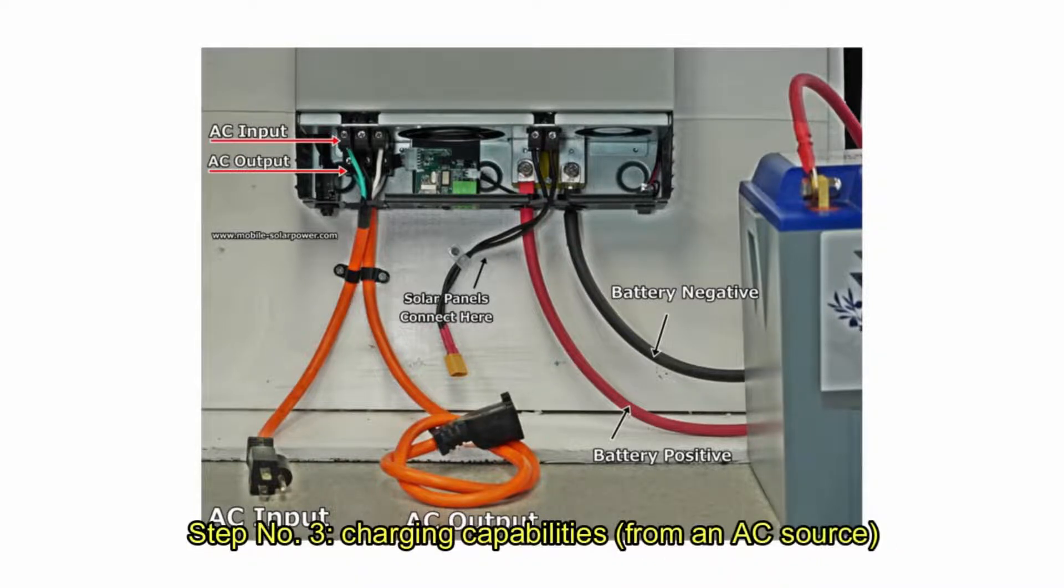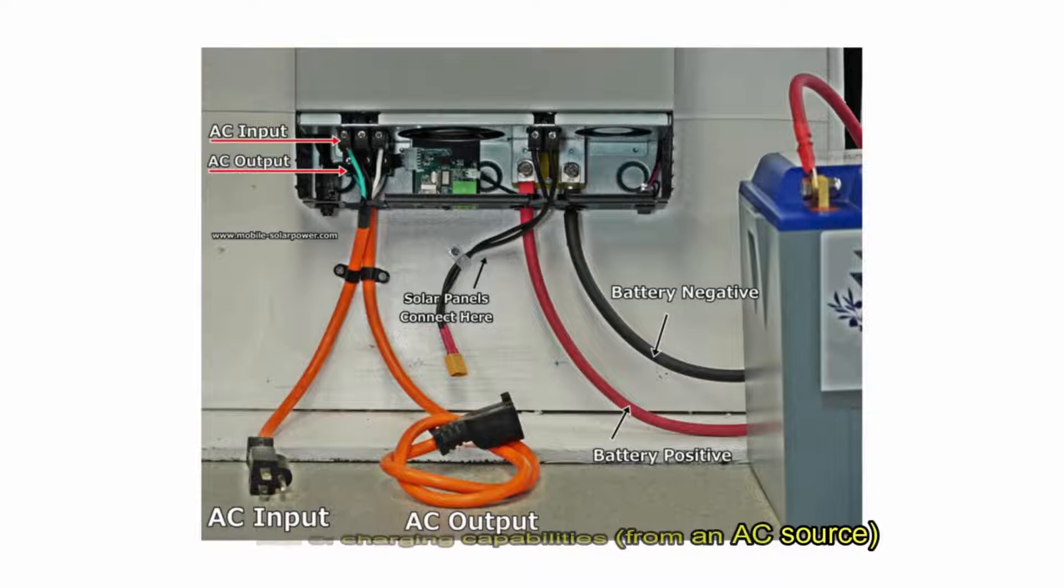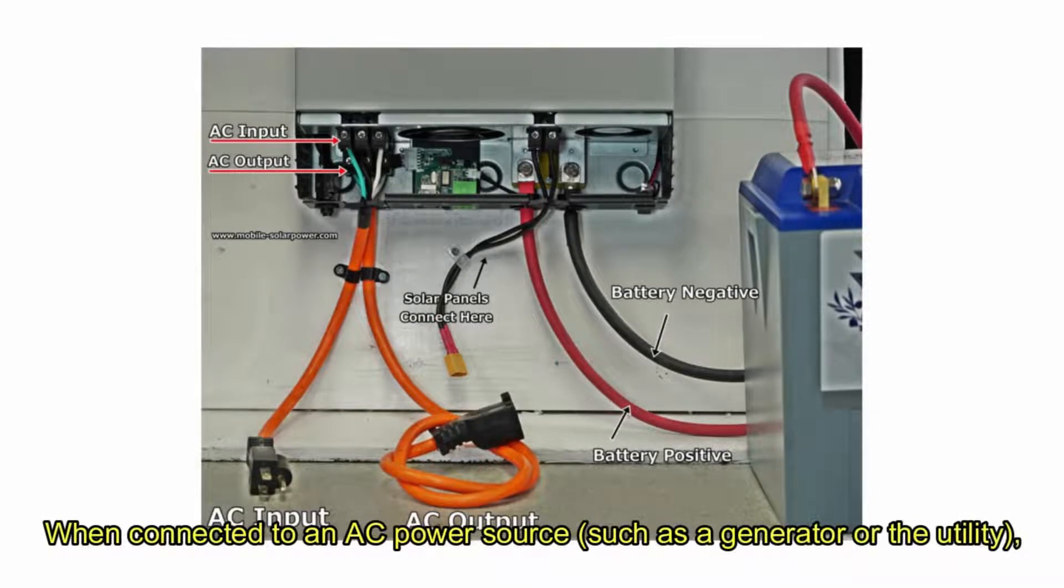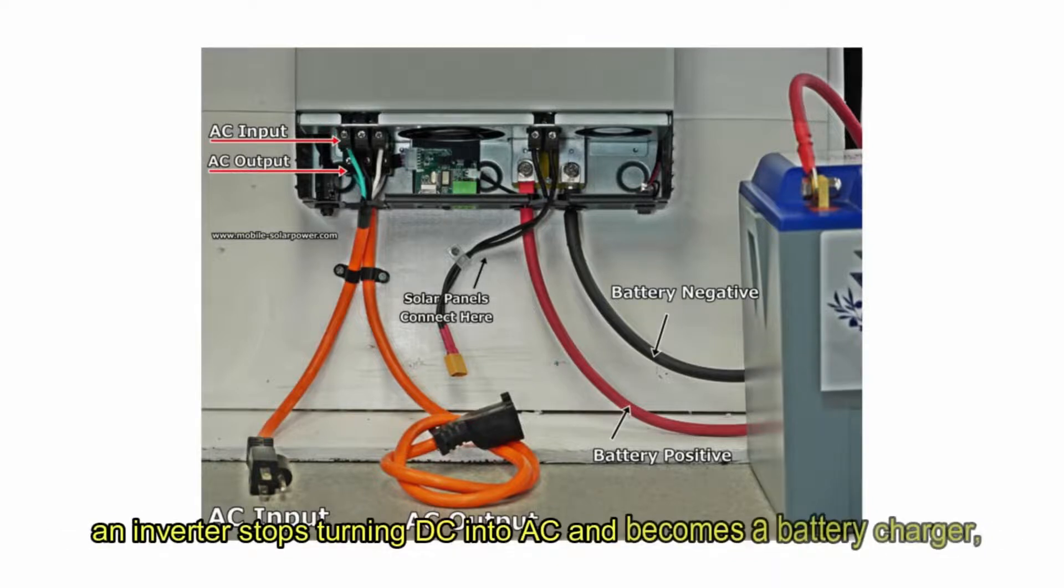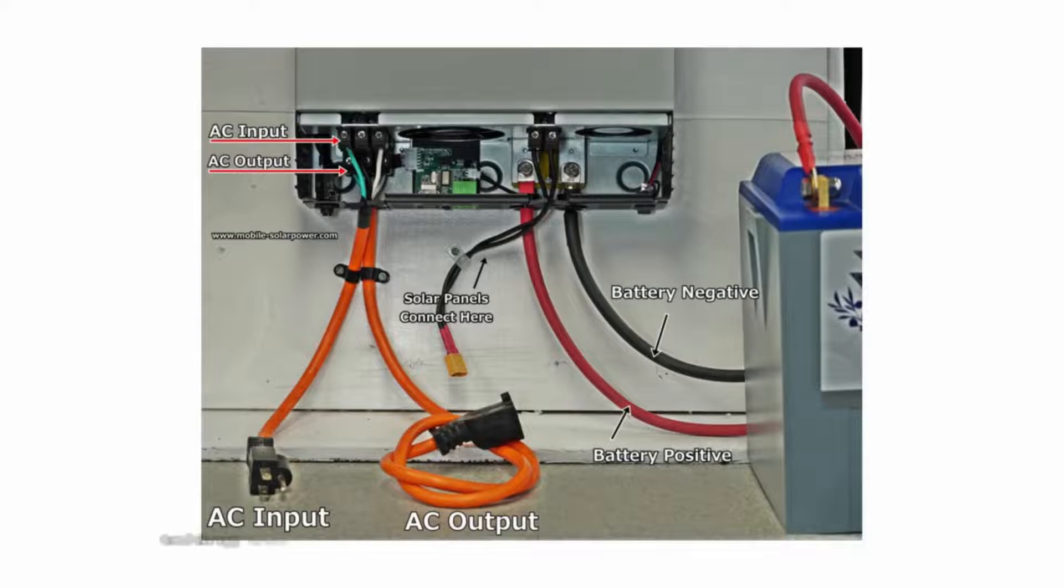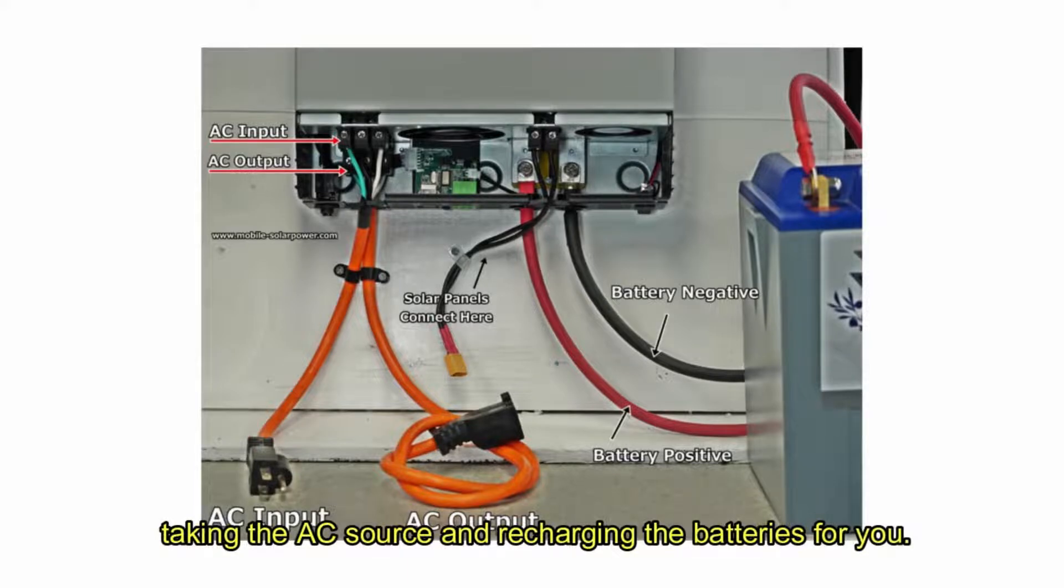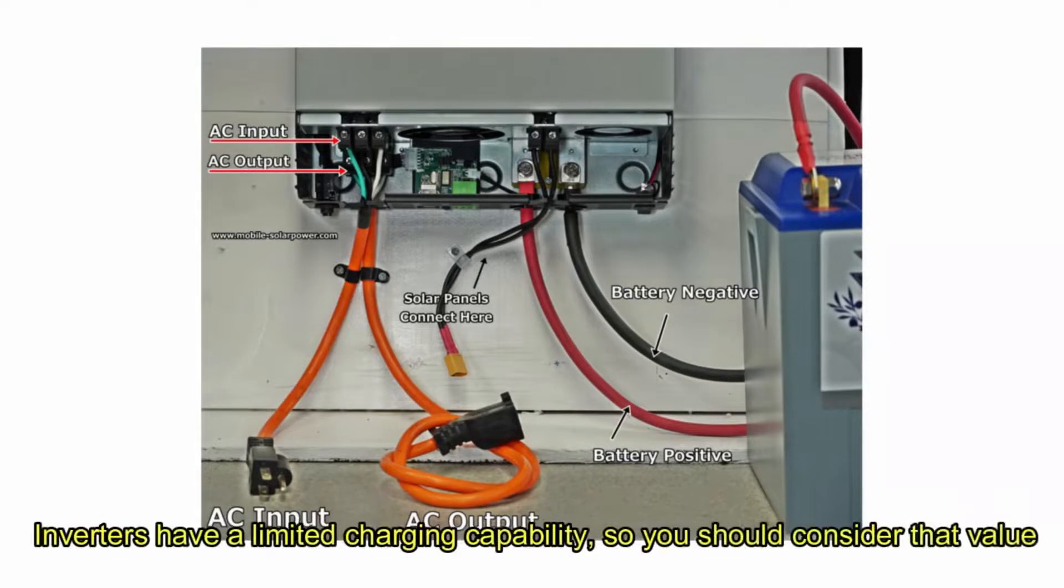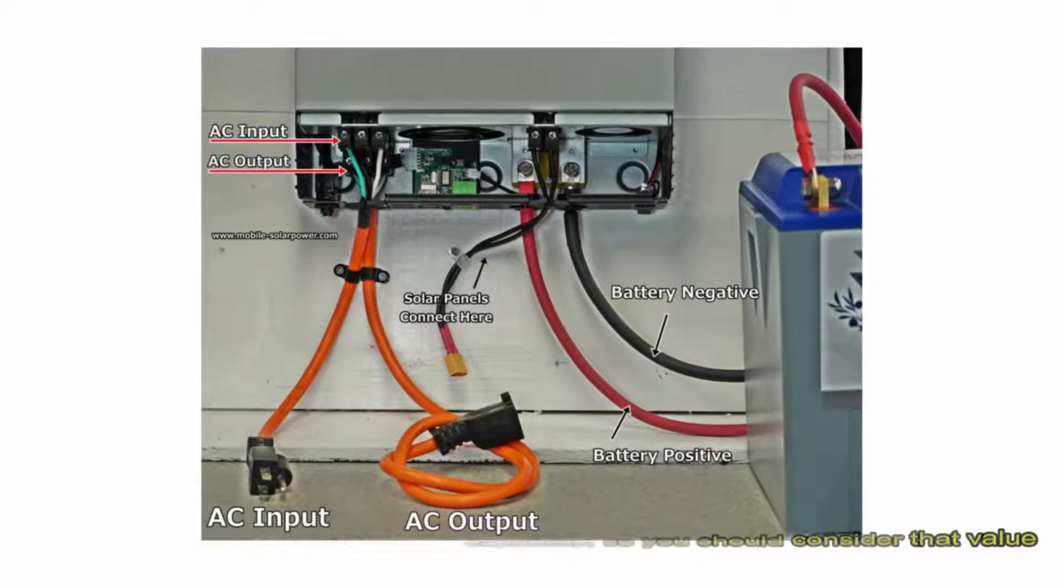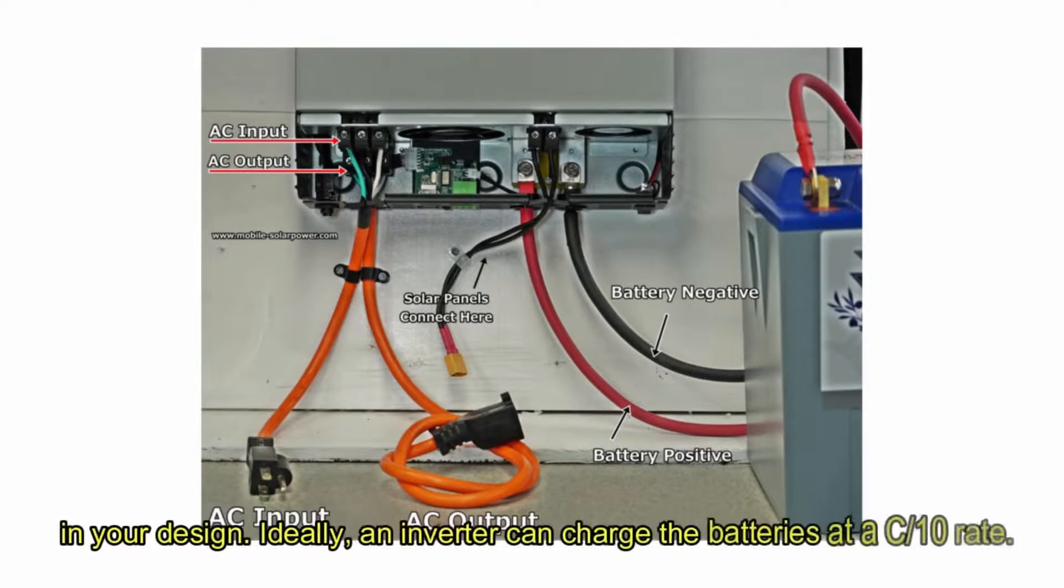Step number three, charging capabilities from an AC source. When connected to an AC power source, such as a generator or a utility, an inverter stops turning DC into AC and becomes a battery charger, taking the AC source and recharging the batteries for you. Inverters have a limited charging capability, so you should consider that value in your design. Ideally, an inverter can charge the batteries at a C over 10 rate.